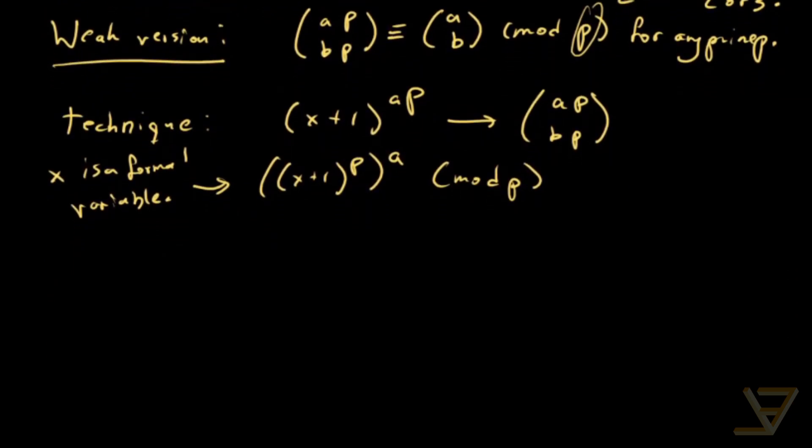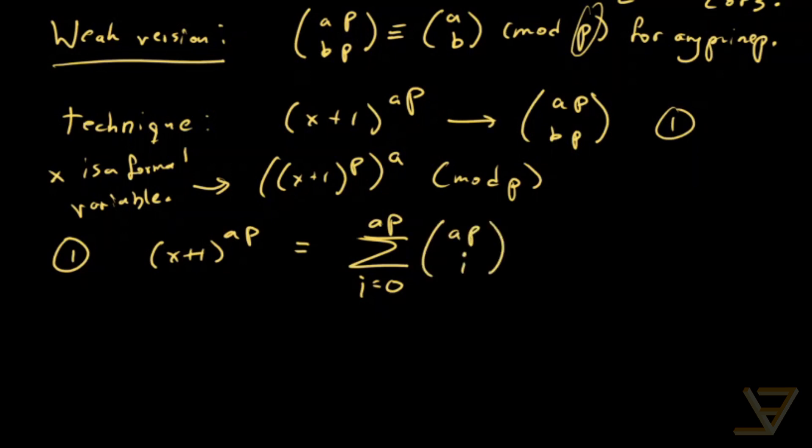So let's do the first part. We get x plus 1 to the power of a p. By the binomial theorem, this is equal to the sum of i, the index i from 0 to a p, a p choose i, x to the power of i. So that's the whole expansion.